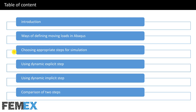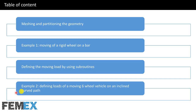Topics include: choosing appropriate steps for simulation using dynamic explicit step, using dynamic implicit step, and comparison of the two steps; meshing and partitioning the geometry; Example 1 — moving of a rigid wheel on a bar, defining the moving load by using subroutines; and Example 2 — defining loads of a moving six-wheel vehicle on an inclined curved path.